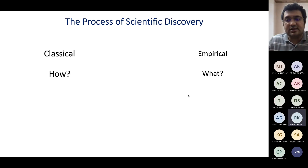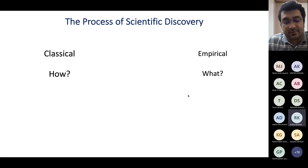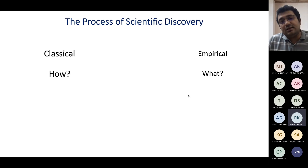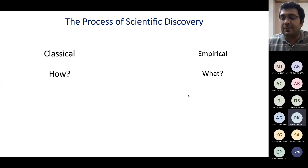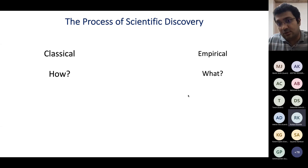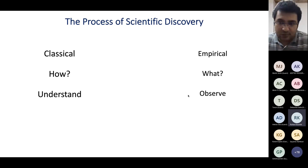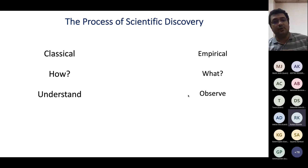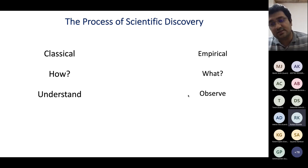In the classical approach, the question we ask is how do things work — how does a process happen, how does the sun rise in the east. In the empirical sciences, we do experiments, get data, and ask the question 'what happened' — what happened in the past, at a particular time. In the classical approach, our focus is to understand phenomena — how and why things happen. In empirical science, we ask what happened and observe.